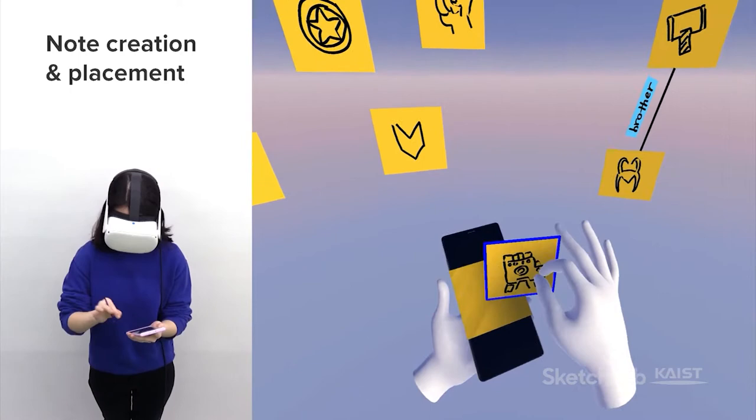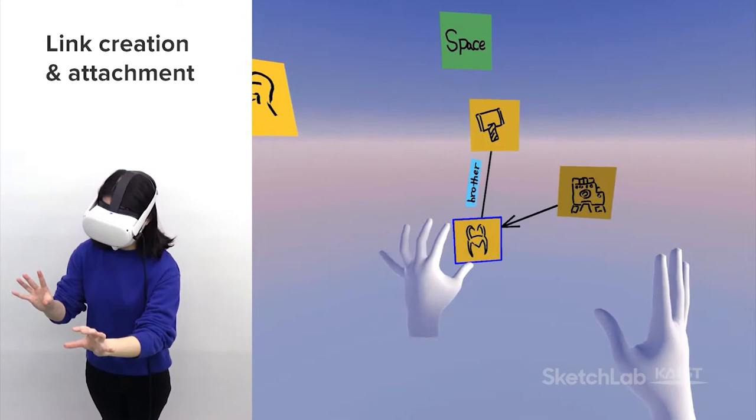The main villain of the Avengers, Thanos, orders Loki to invade the Earth. You can create a directional link by pinching while moving the hand in the direction of the arrowhead and use it to describe this one-way relationship.